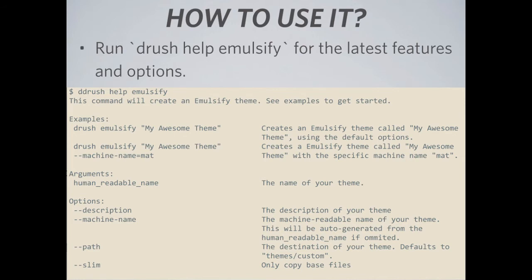We have four options. The first is the theme description, which will appear within Drupal and your .info file. The second is the machine name — this allows you to pick the directory name and the machine name as it appears within Drupal. The third option is the path, which is where your theme will be installed; it defaults to themes/custom, but you can change it to any directory relative to your web root. The fourth and final option is the slim option, which allows advanced users who don't need demo content to get only the bare minimum required to create a new theme.